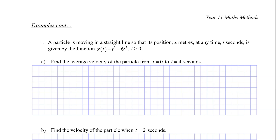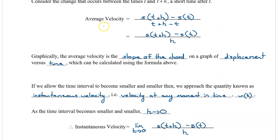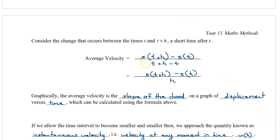Part a: Find the average velocity of the particle from t equals 0 to t equals 4 seconds. The key thing here is we're looking for the average velocity. Going up to our notes, the average velocity is defined as s(t + h) minus s(t), all divided by h.